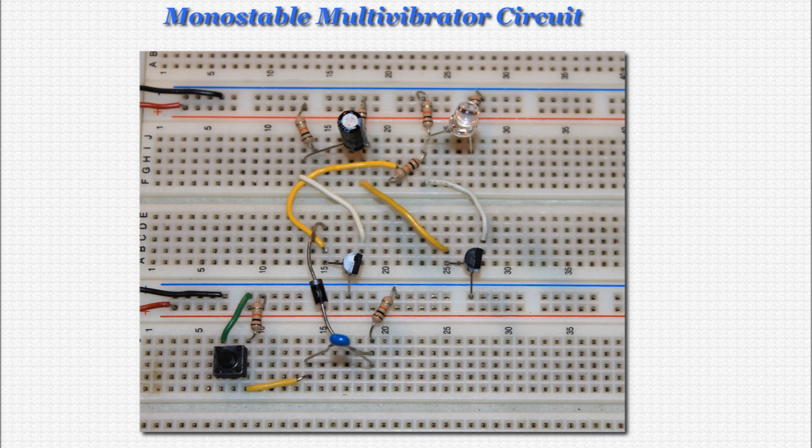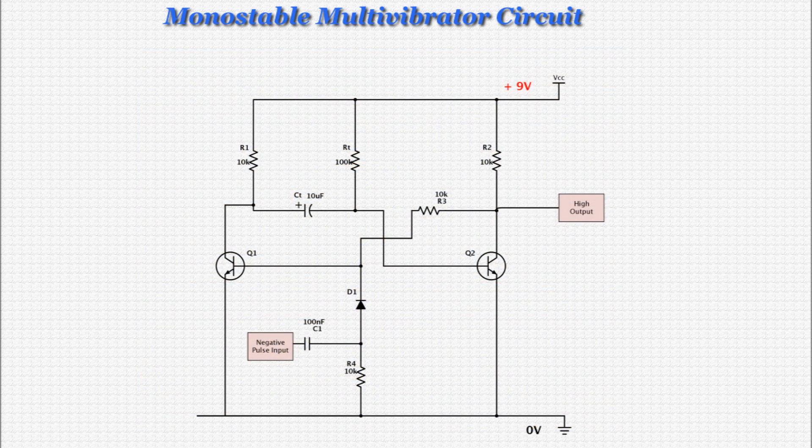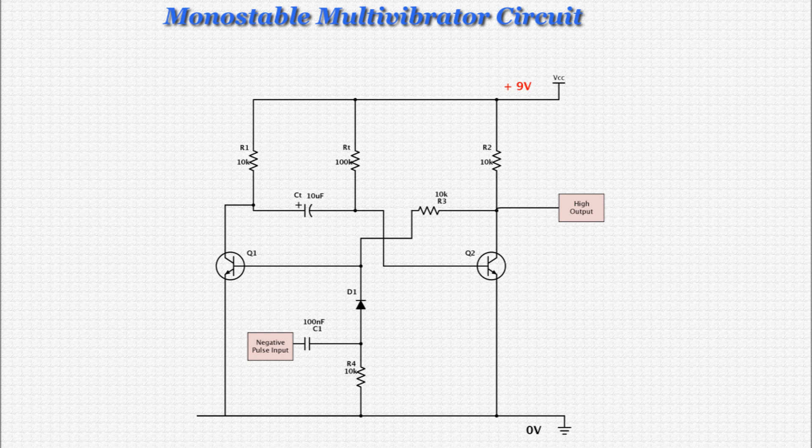Let's start with the monostable multivibrator circuit. Here's the schematic for this circuit. Essentially what the circuit does is it takes an input in the form of a negative pulse and generates a high output for a very specific duration of time. This duration is determined by the size of a capacitor and a resistor in the circuit. These values can be changed to alter the duration of the high output pulse.